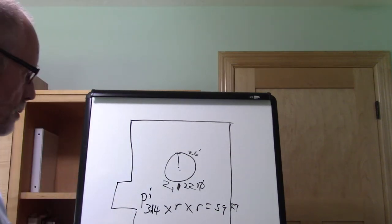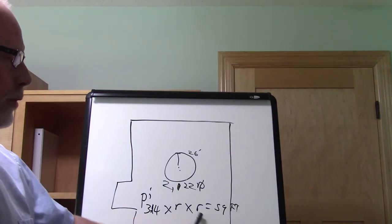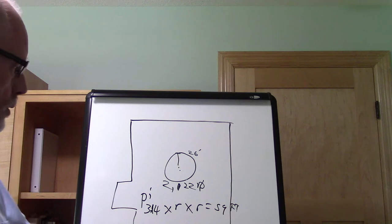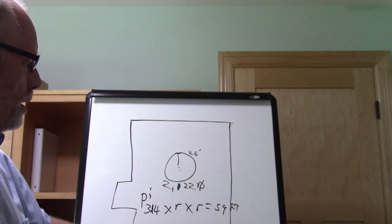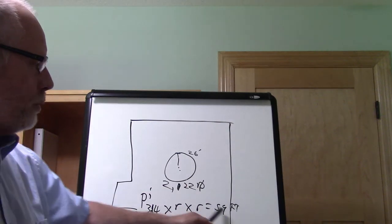Again, all it is is pi times radius times radius equals square footage. So it's 3.14 times the radius, whatever that measurement is, times the radius equals the square footage.